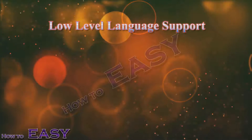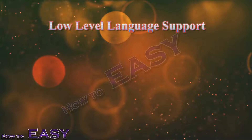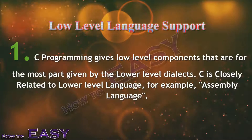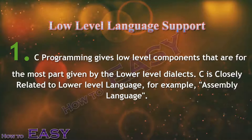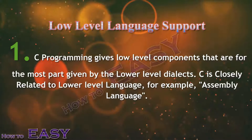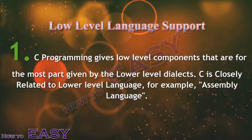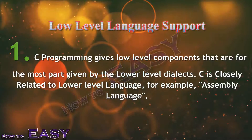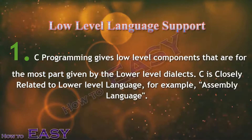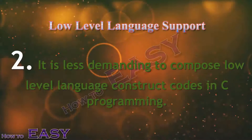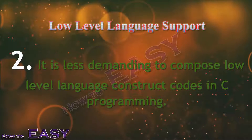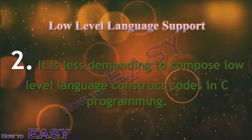First, low level features. C programming gives low level components that are for the most part given by lower level languages. C is closely related to lower level language, for example assembly language. It is less demanding to write low level language construct codes in C programming.